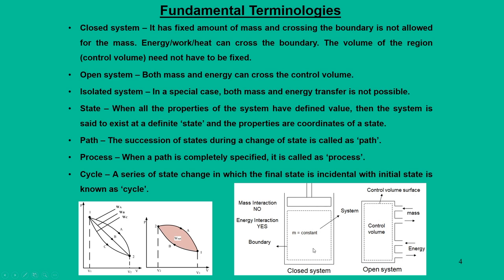The closed system has flexibility — it can interact with surroundings by virtue of energy interactions. When you move on to an open system — many times referred to as a control volume — the volume of the system can change because the open system allows mass to come in and go out. It also allows energy to enter and exit the system. Through this process, the open system allows both mass and energy interactions.